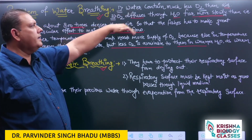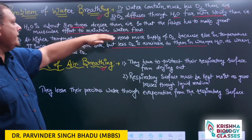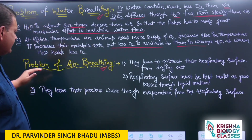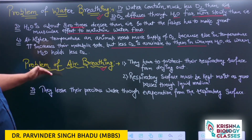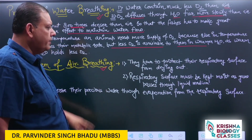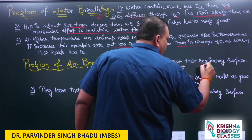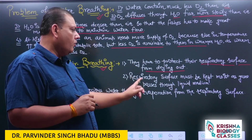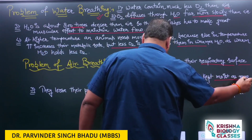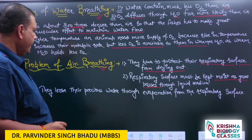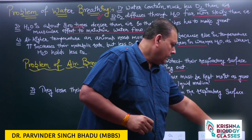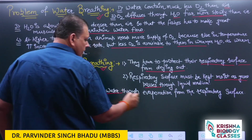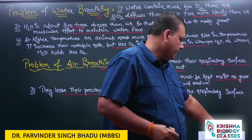Water contains less oxygen than air, diffuses very slowly, and water is highly dense, so organisms performing water breathing need to perform more effort. For air breathing organisms, the most important problem is that they need to protect their respiratory surface from drying out, keeping the surface moist as gases pass through the liquid medium. These organisms also lose precious water through evaporation from the respiratory surface.